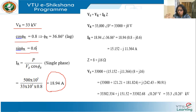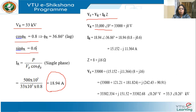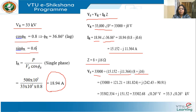The sending end voltage VS equals VR plus IR·Z. This is the exact equation — there is no approximation in this model. Taking VR as the reference at 33,000 V at 0° and IR at 18.94 A at −36.86° (since 0.8 PF lag means cos⁻¹(0.8) = 36.86°), and Z = 8 + j16 ohms. Substituting and performing complex arithmetic multiplication in rectangular form, then converting to polar form to get the angle, the sending end voltage is 33.3 kV at an angle of 0.26°.